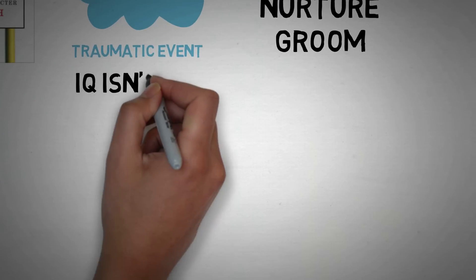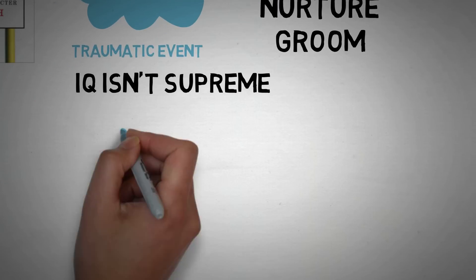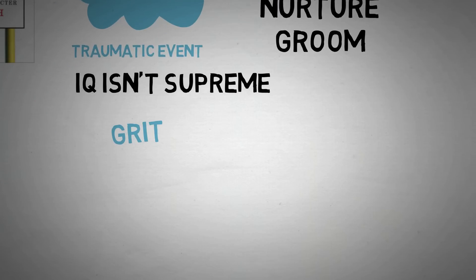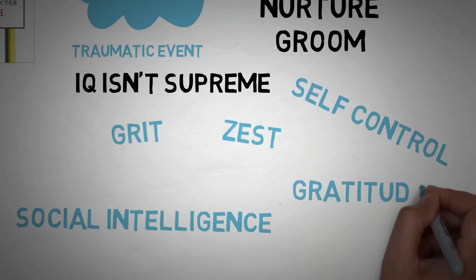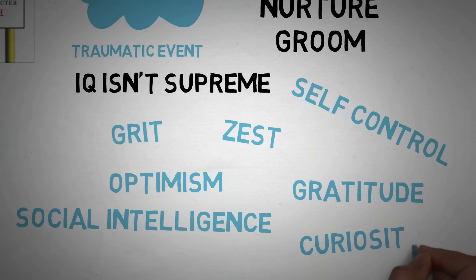He says that IQ is not the only thing that determines success. In fact, he came up with a list of seven things that can determine success. And those are grit, self-control, zest, social intelligence, gratitude, optimism, and curiosity.